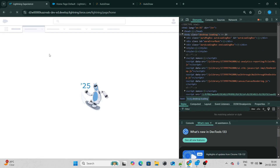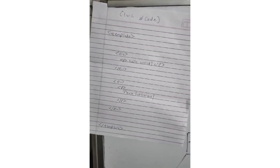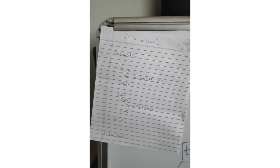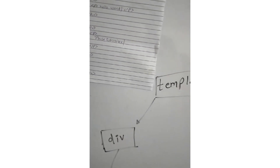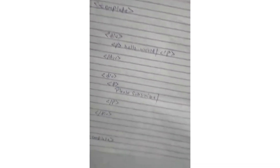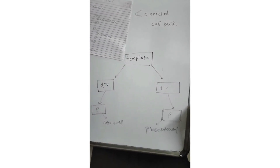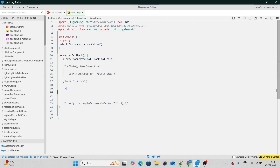Let's move on to our next lifecycle hook, which is connected callback. Whenever your LWC component is connected to the DOM, that's where connected callback is called. Within connected callback, the LWC code starts getting converted into a tree structure. Our LWC code has a template at the top node, so a node for template will be created. Similarly, we have a div under that template, and under the div, we have a p and hello world. So basically, whatever LWC code you have will start getting converted into the tree structure just like this. Connected callback executes only when your LWC component is connected to the DOM.